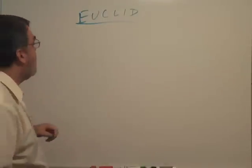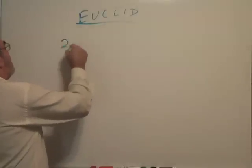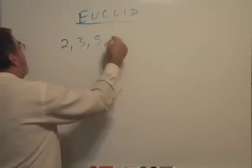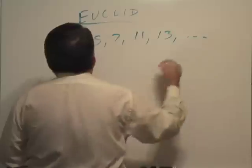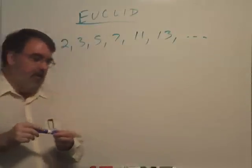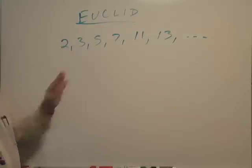All right. Well, just to remind you what a prime number is, a prime number is a number that can be divided only by itself and one. So here are the first six prime numbers. There's only one even prime number. All the rest are odd.